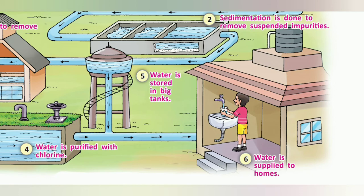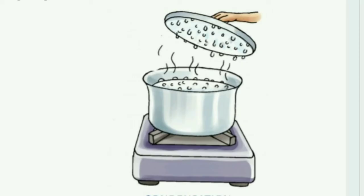Water can also be purified at home by boiling, chlorination, and water filters. Let's learn about each one. Boiling is the simplest way to purify drinking water. You simply boil water for 10 minutes.